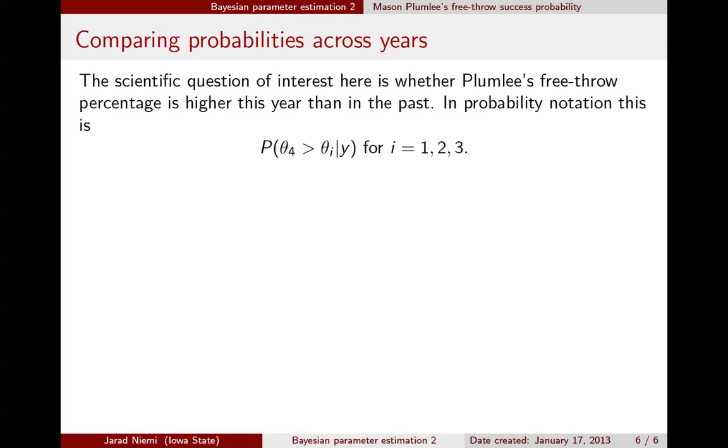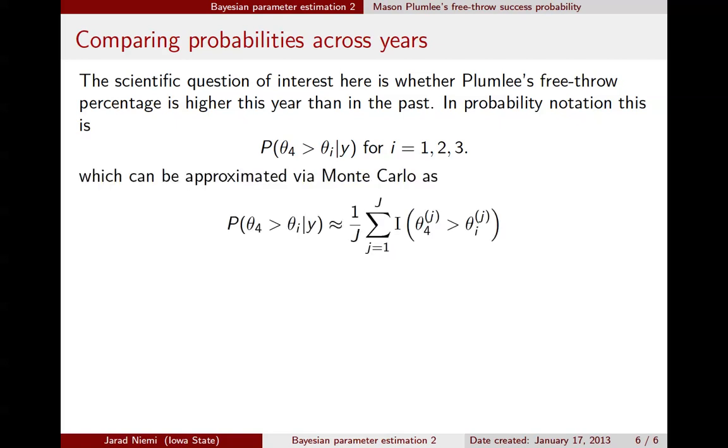So in probability notation, it would look like this. What's the probability that his success probability parameter this season is bigger than it was for a previous season? So we're thinking about putting theta 1, theta 2, and theta 3 in here. This is not necessarily an easy problem to solve analytically, but it's a very easy problem to solve numerically using Monte Carlo methods. So we're going to approximate this posterior quantity where the theta 4j's are going to be drawn from a beta distribution whose parameters are for the 4th season, and the theta i are going to be draws from the posterior distribution for that season.